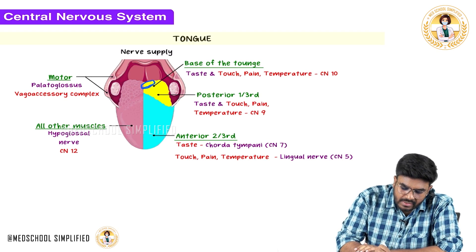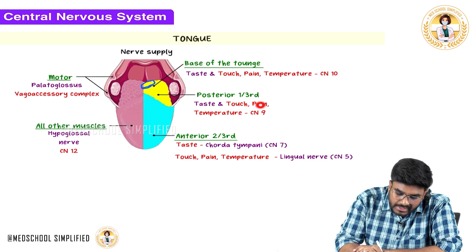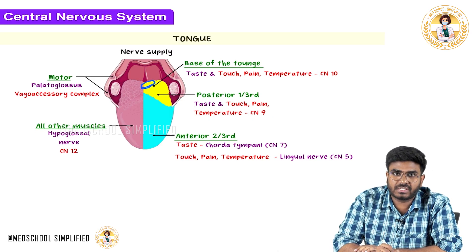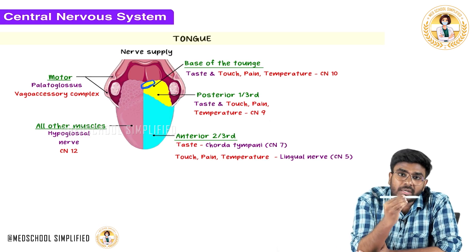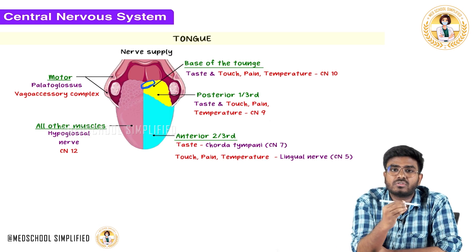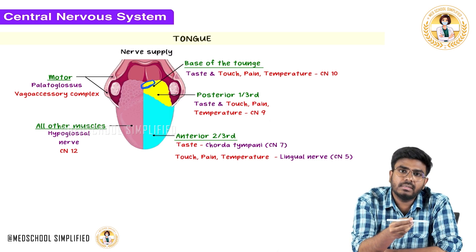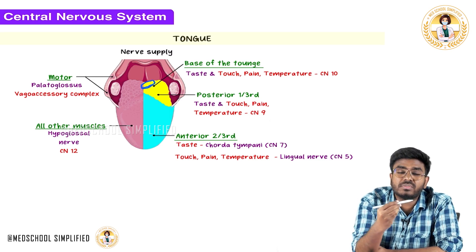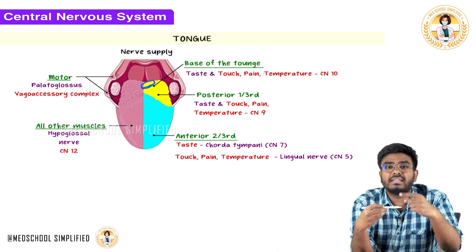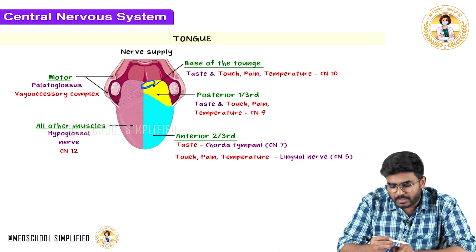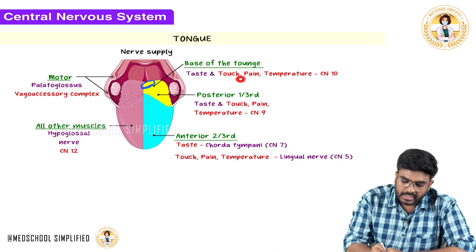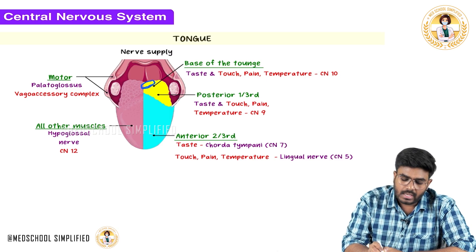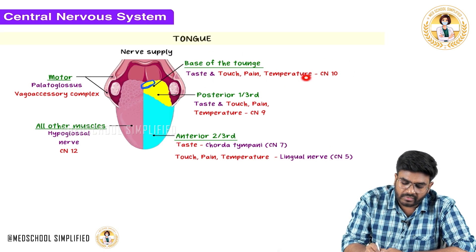From the posterior one-third of the tongue, touch, pain, and temperature are carried by the 9th cranial nerve — but not only those; taste information is also carried via the 9th cranial nerve. The 9th cranial nerve has both general somatic sensory fibers carrying touch, pain, temperature and taste neurons. From the base of the tongue, touch, pain, temperature and taste are carried by the 10th cranial nerve, the vagus nerve.